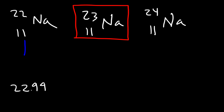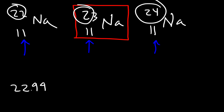What you need to know is that the atomic number is associated with the identity of the element, so sodium always has an atomic number of 11. The mass number can change for different isotopes, so that number can vary. But the identity of the element is dependent on the atomic number. Now let's talk about the formulas we need in order to calculate the number of protons, neutrons, and electrons.